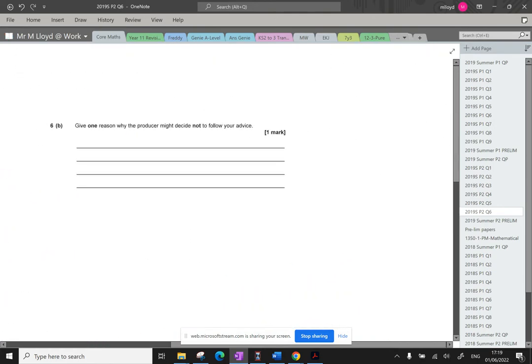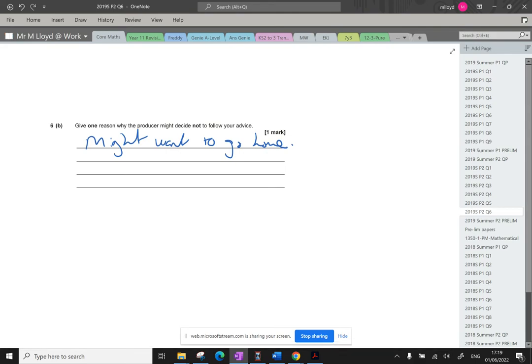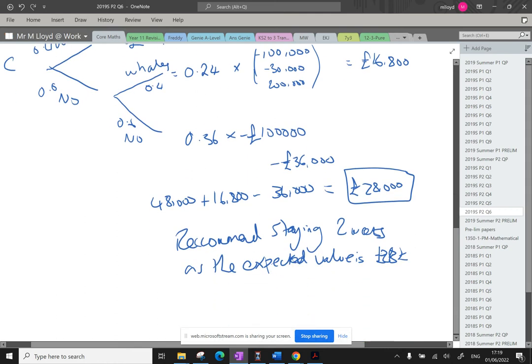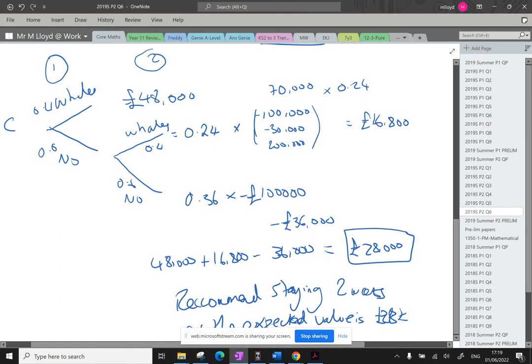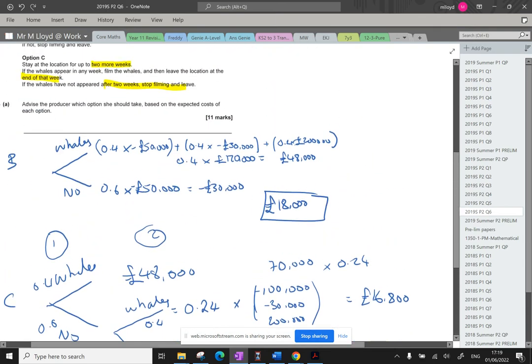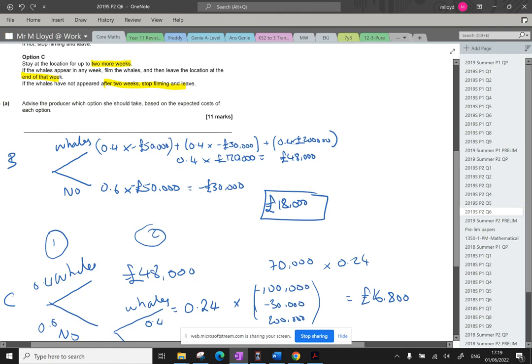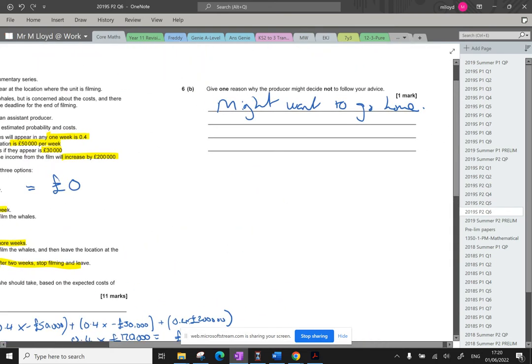Give one reason why the producer might not follow your advice. They might want to go home. That's my favorite, to be honest. They might have another project coming up. They might not want to spend the money. They might not have the money to spend. They might not want to risk losing this bit here. This option here could have a loss of £36,000. Well, actually, if we look at it in reality, that's just the expected loss. There's a potential for them to lose £100,000. If the whales do show up basically straight away, it's £120,000 in. And that difference with £120,000 and losing £100,000 is quite a lot of money. So they might just not want to take the risk.